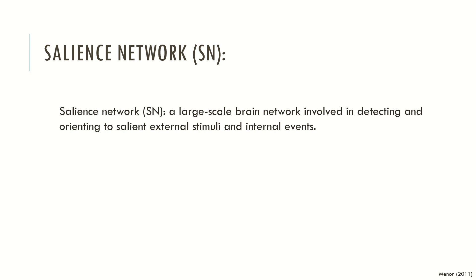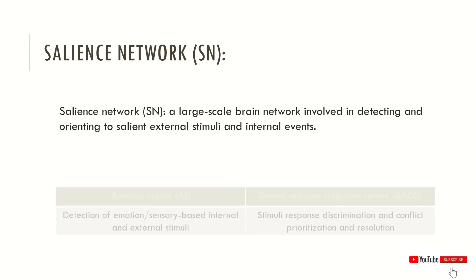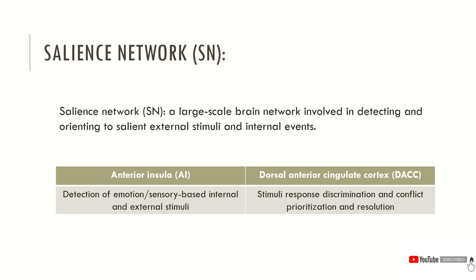The salience network has some ramifications in the anterior insula, which is responsible for detection of emotions and sensory-based internal and external stimuli. When we think about the dorsal anterior cingulate cortex, we know that this brain structure is typically associated with stimulus-response discrimination, and conflict prioritization and resolution. This network is very important when we need to orient our attention towards salient stimuli.